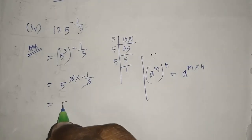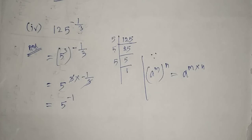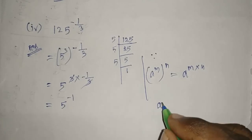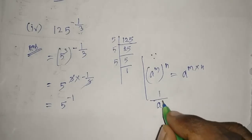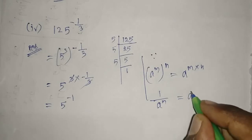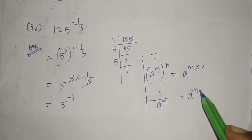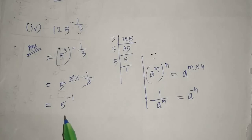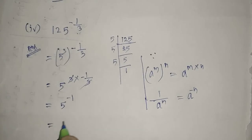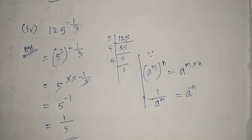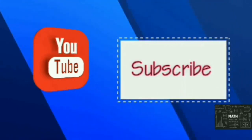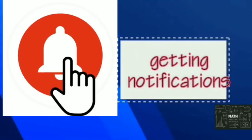The numerator and denominator cancel, giving 5 power minus 1. Now 5 power minus 1 is in the form a power minus n, which equals 1 by a power n. With n equal to 1, this gives 1 by 5 power 1, which is just 1 by 5. So 1 by 5 is the required answer for the fourth question. Thank you for watching this video. Subscribe for more videos and press the bell icon for notifications.